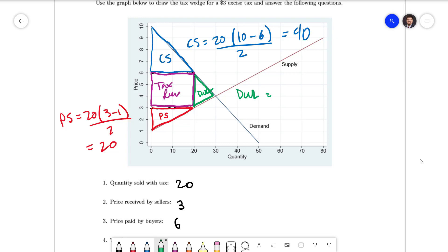And finally for our deadweight loss that's still a triangle. It's the green one. Has a base looking at it sideways, 6 minus 3 which comes out to 3 the size of the tax. And a height of 30 minus 20. That is the quantity that is lost due to the tax relative to the original equilibrium. That's going to come out to 3 times 10 over 2 which is 15.